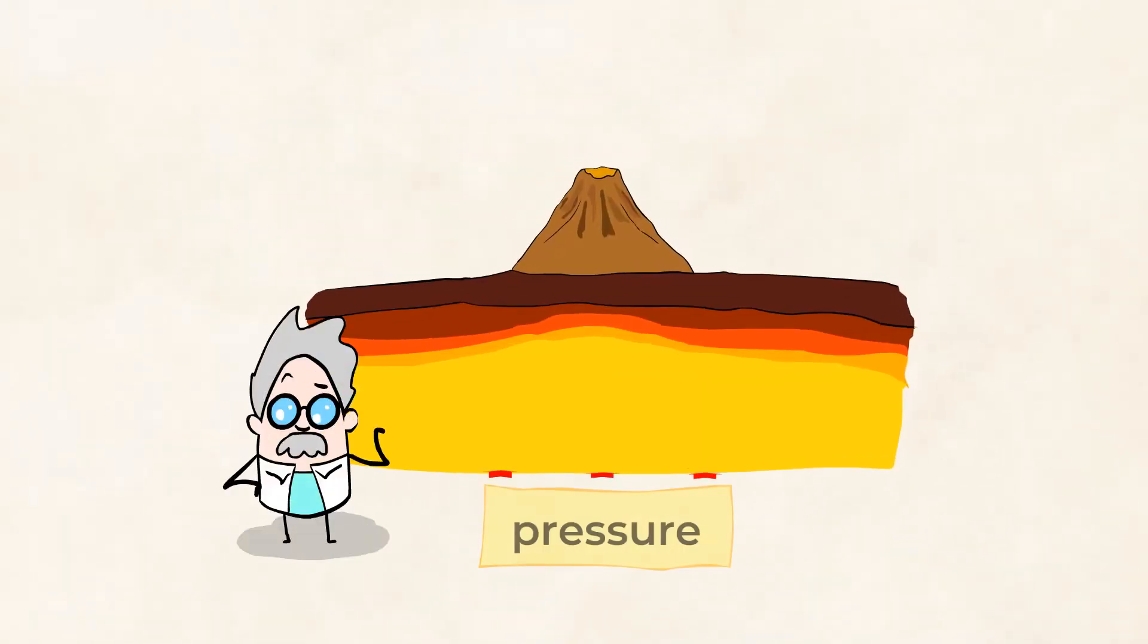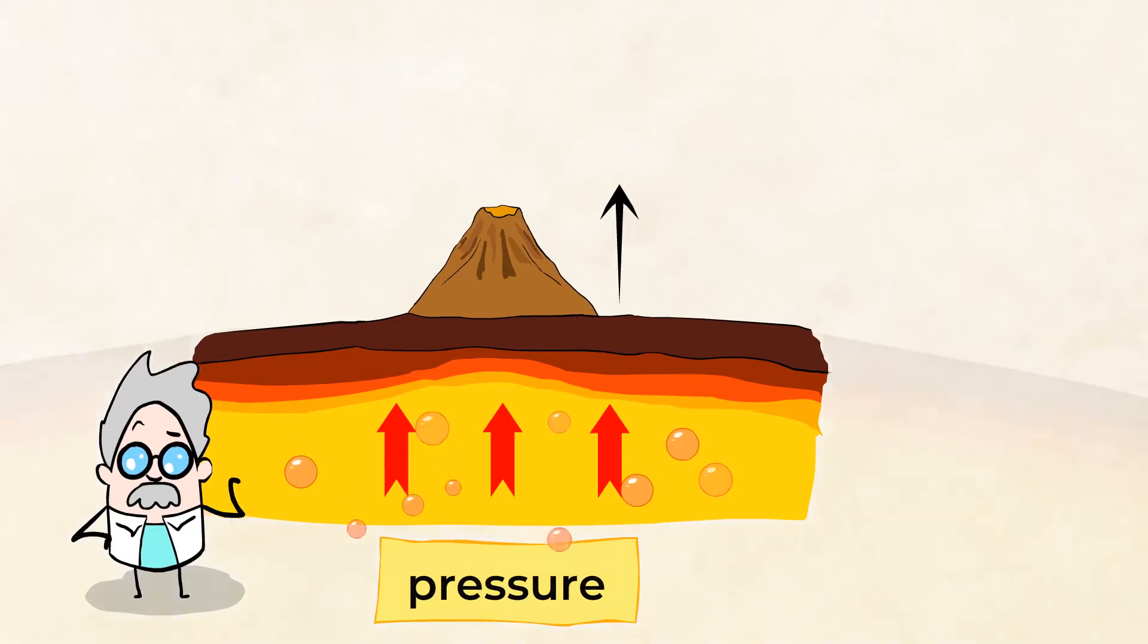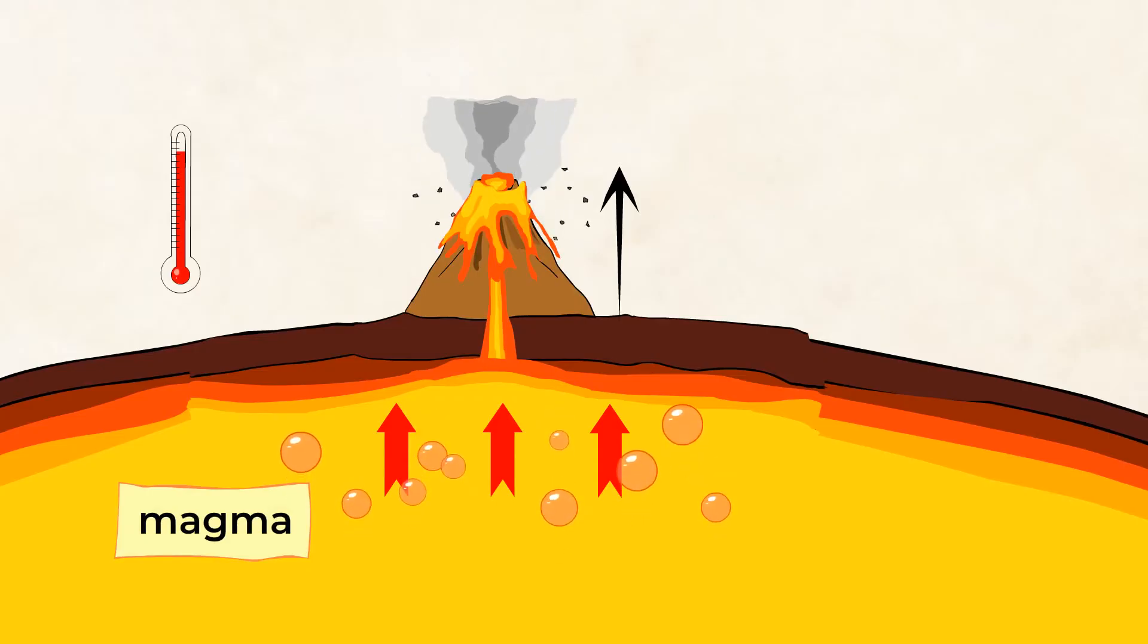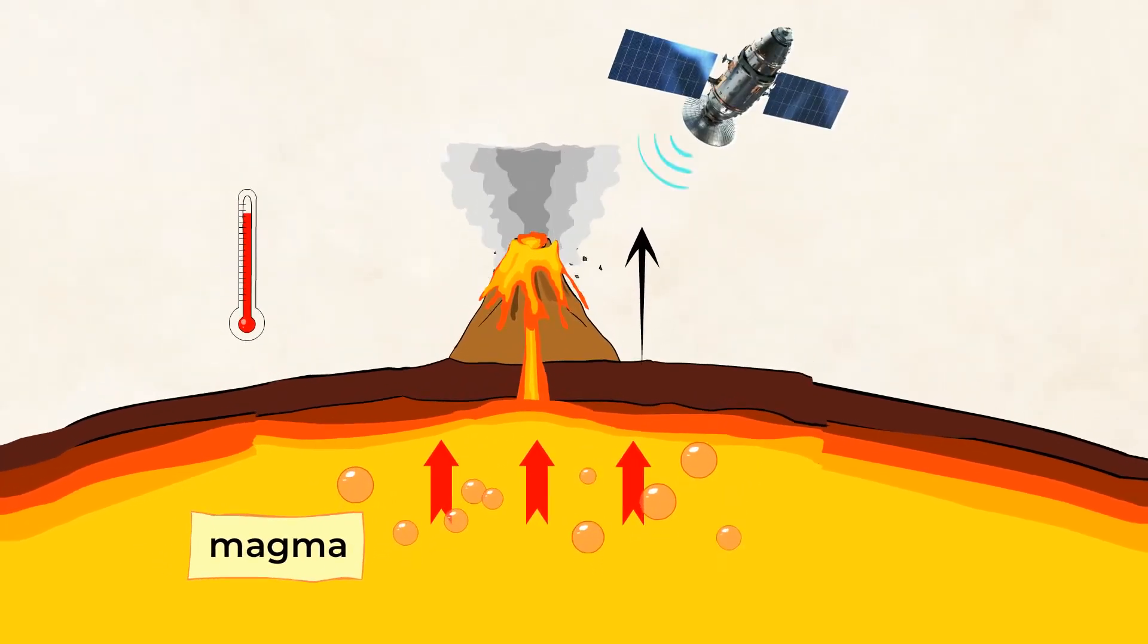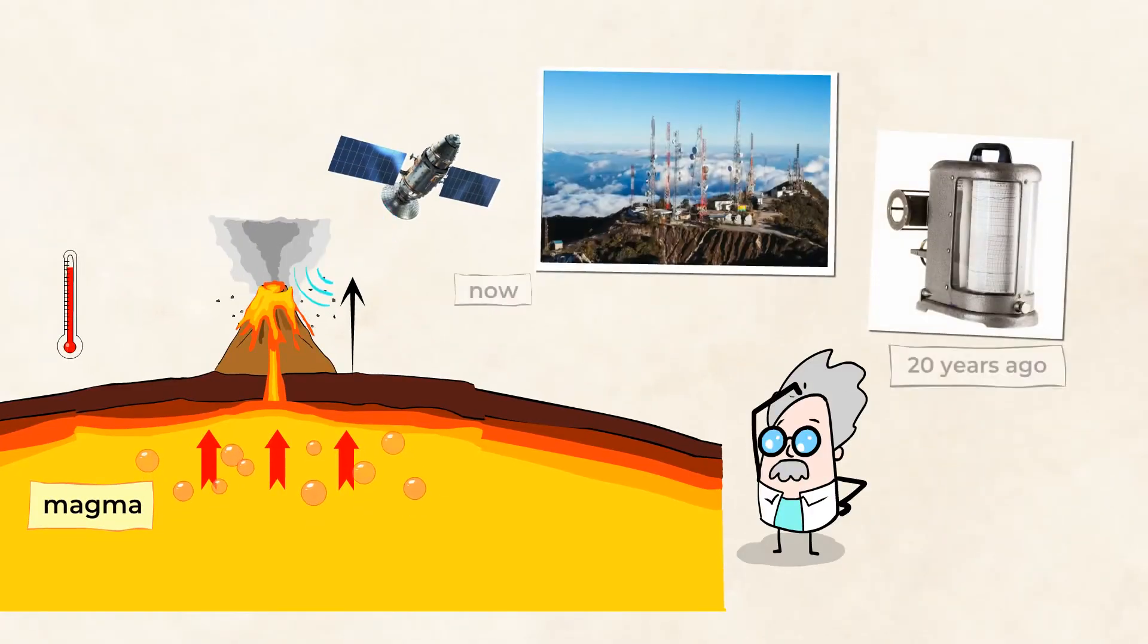Pressure builds up inside a volcano as gas bubbles form in magma. Gas bubbles need to escape, causing the volcano to erupt. It's the hot magma underground that actually pushes the volcano upward. The radar from satellites is able to bounce waves off of the volcano, and if the waves take a shorter time to get back to the satellite, that means that the volcano has pushed upward.